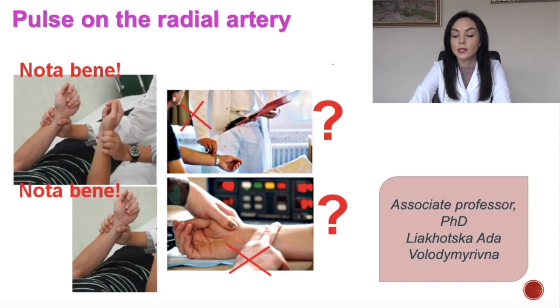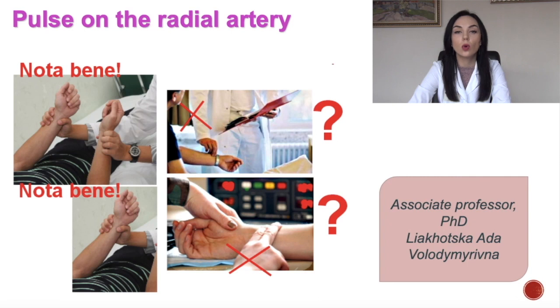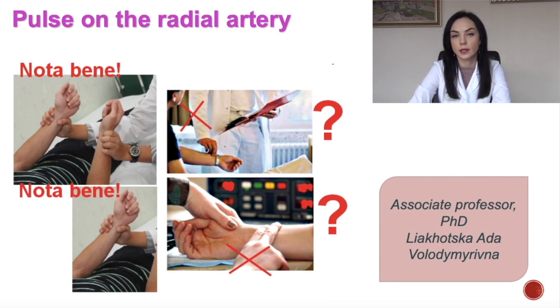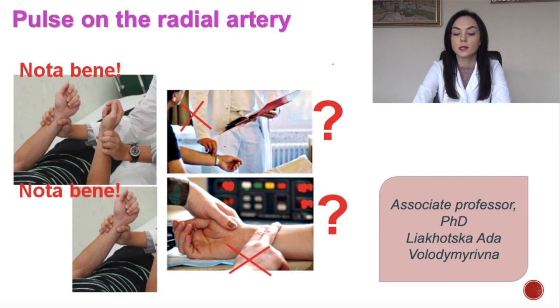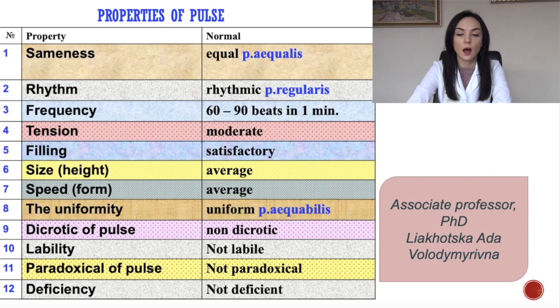Look at the picture. See on the left side how to correctly measure the pulse — not like on the right side, please. This is how we measure pulse on the radial artery.